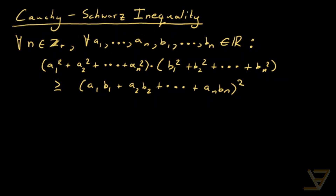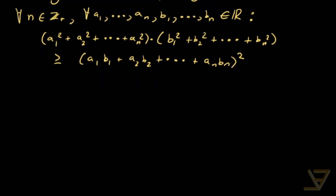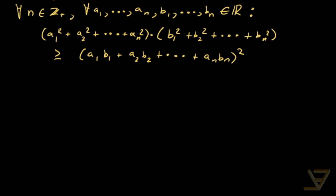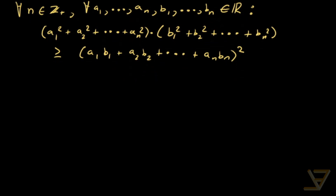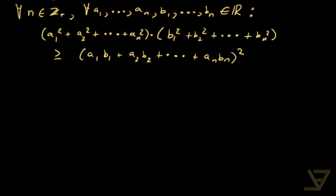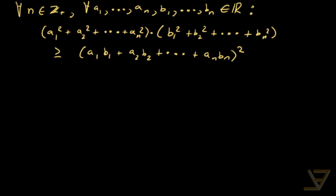This is actually pretty useful in olympiads and math contests because it allows us to make certain approximations, and there are many special cases of the Cauchy-Schwarz inequality that can be used, such as Engel's form. But we won't be getting into that — we'll just be proving the Cauchy-Schwarz inequality here.